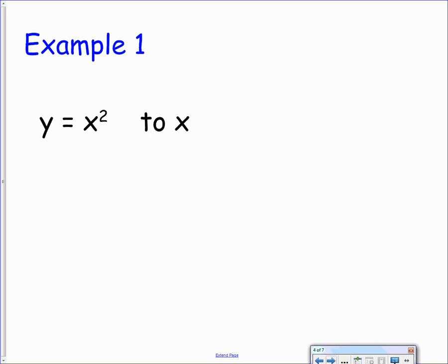Here's your first example then. So we have y equals x squared, and we want to change the subject to x. So you should see here that x is being squared, so to undo that we're going to have to take the square root of both sides.